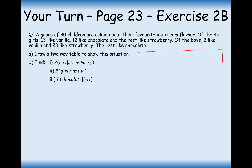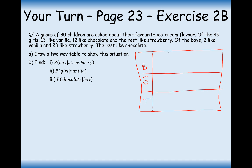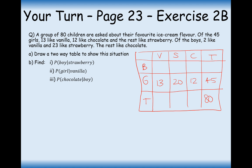Let's get started on this table. We've got boys, girls, and a total column, along with three flavoured ice creams: vanilla, strawberry, and chocolate. Of the 45 girls: 13 like vanilla, 12 like chocolate, and the rest like strawberry — that adds to 25, so 20 like strawberry. There are 80 children total so there are 35 boys. Of the boys: 2 like vanilla, 23 like strawberry, and that leaves 10 boys who like chocolate.